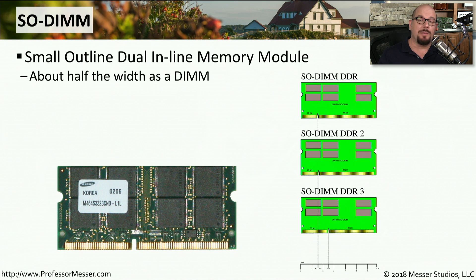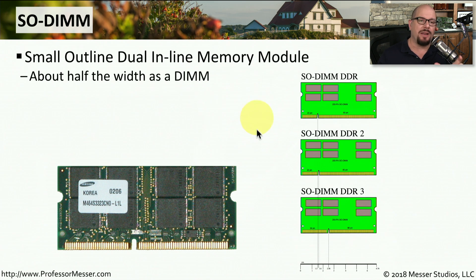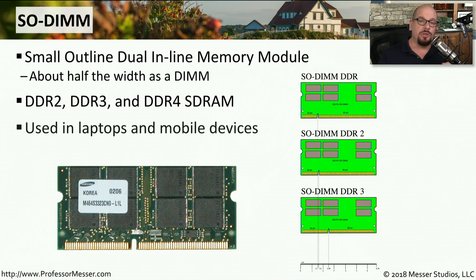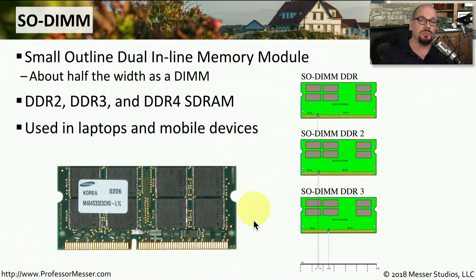The memory inside of a laptop is probably a smaller version of the DIMM — the small outline dual inline memory module, or SODIMM. It's about half the width of a standard DIMM that you would find in a desktop computer. You can find DIMMs and SODIMMs available in DDR2, DDR3, and DDR4 flavors of SDRAM, which we'll explain later on in this video. If you're using a SODIMM, it's probably inside of a laptop or a mobile device because of the size — you're able to fit a lot more information into a smaller area, which is important for those mobile devices.